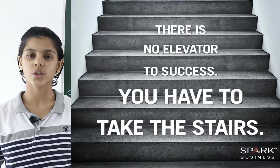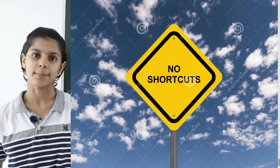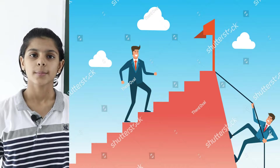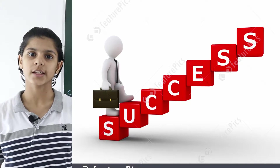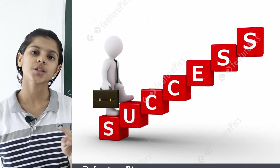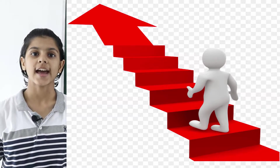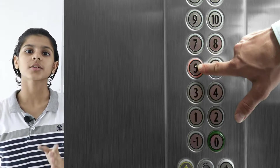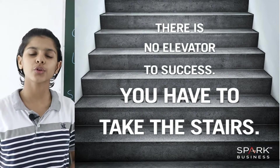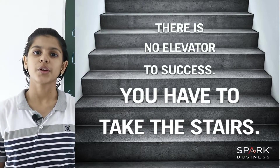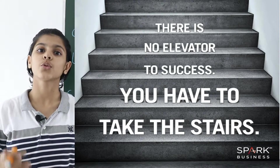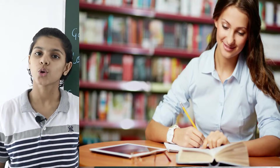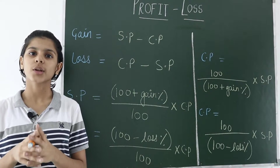There is no substitute, there is no shortcut for hard work. For example, for reaching the top of a building, you have to take the stairs, because when we start climbing stairs, we progress step by step and the stairs we have climbed are established. The elevator is like a shortcut — it cannot make you reach success, but it can give you temporary pleasure. That's why you have to work hard in a disciplined manner. So now let's quickly get started with our topic, profit and loss.